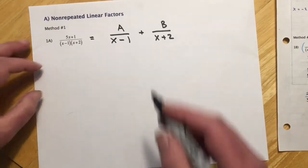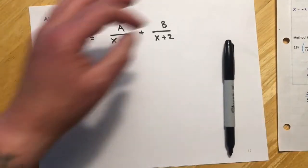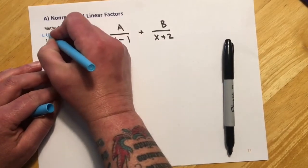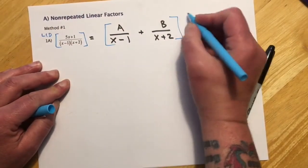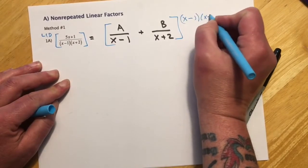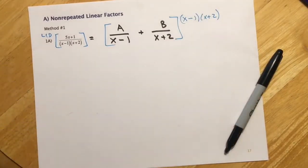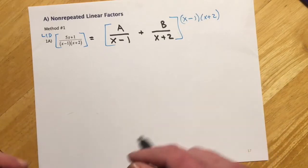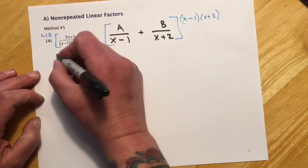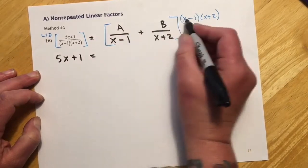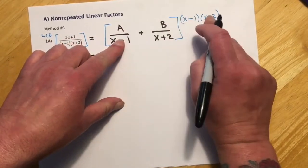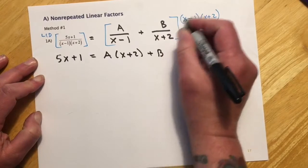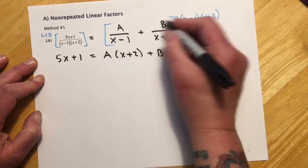So then once we do that, we're going to multiply both sides by the LCD. And so that's going to look like, over here I'm just going to write LCD for the sake of space. And then over on this side, it's going to be (x-1)(x+2). And this is our first method. But this step is the same for either method. So when I pick up the other one, I'll pick up here. So here the LCD would just cancel this and I get the 5x+1. On this side, the (x+1)s cancel. So I get A times (x+2), plus B times, and then those would cancel, so the (x-1). So they each get the other one, basically.